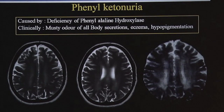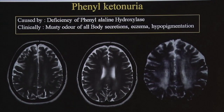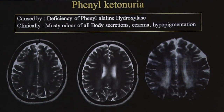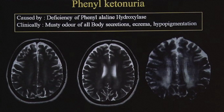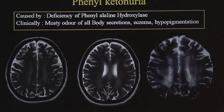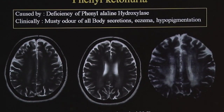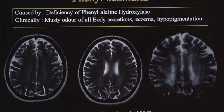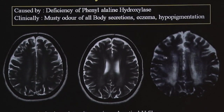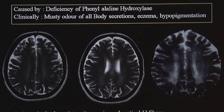The fourth condition affecting periventricular white matter is phenylketonuria, which happens due to deficiency of phenylalanine hydroxylase enzyme in the brain. Clinically, patients can be diagnosed by the presence of a musty odour of all body secretions like urine and sweat. These patients also have hypopigmentation and patches of eczema on limbs. On MRI, you will see subtle symmetric fluffy periventricular hyperintensities which show restricted diffusion but ADC-negative diffusion abnormality.